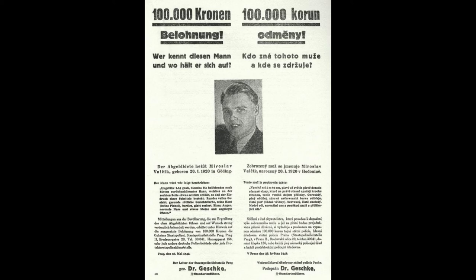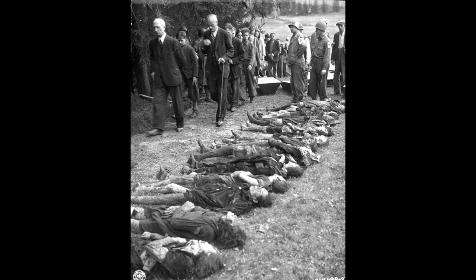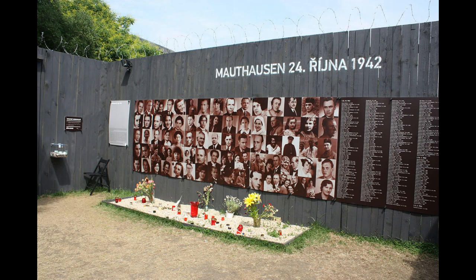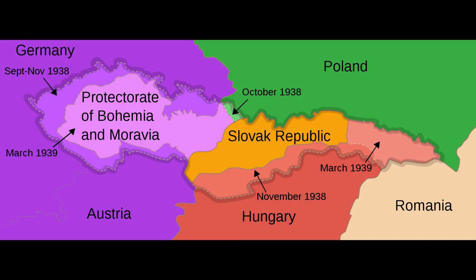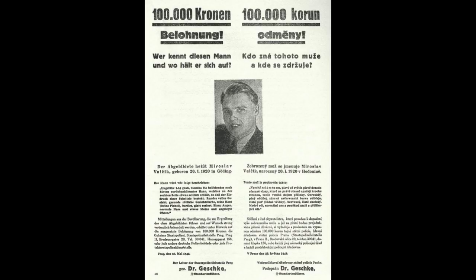The occupation ended with the surrender of Germany following World War II. During the German occupation, between 294,000 to 320,000 citizens — including Jews, making up most of the casualties — were murdered. Reprisals were especially harsh in the aftermath of the assassination of Reinhard Heydrich, for example the infamous and widely publicized Lidice massacre. Large numbers of people were also drafted for slave labor in Germany.